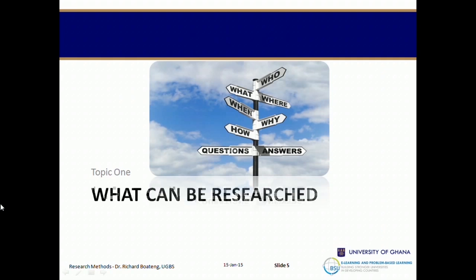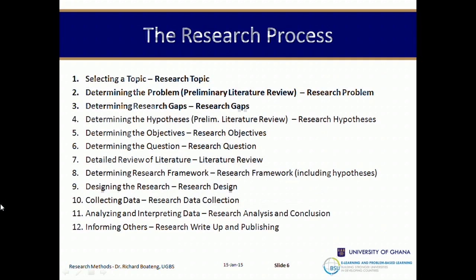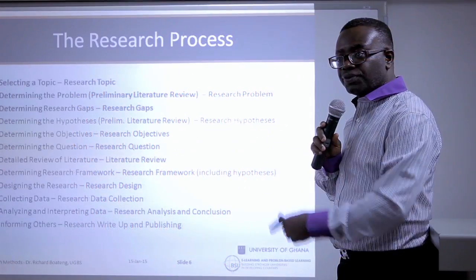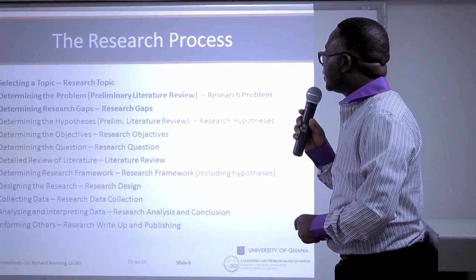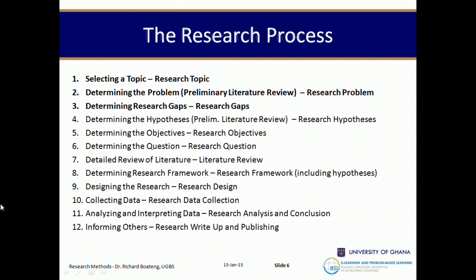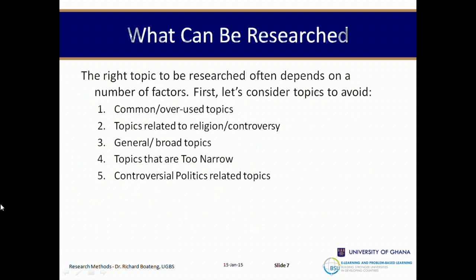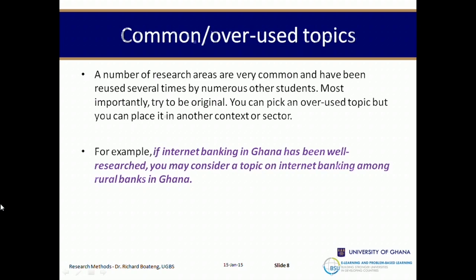So what can be researched? When we met last time we looked at the research process and said it has a number of steps which have to be flexible. The first things we are going to address today are: selecting a topic, determining a research problem, and determining research gaps. Topics that cannot typically be researched include common and overused topics, topics related to religion and controversy, general or broad topics, topics that are too narrow, and controversial political topics.